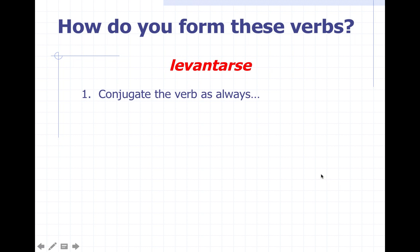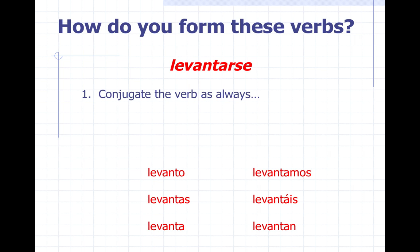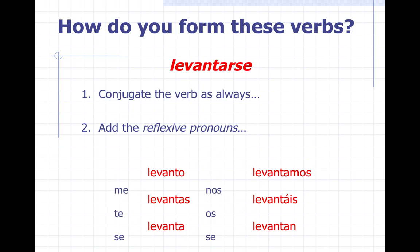How do you form these verbs? Take levantarse. To conjugate the verb, we need to set aside the -se for a moment and go back to its infinitive form with the -ar, -er, or -ir ending. Identifying levantarse as an -ar verb, the conjugations are: levanto, levantas, levanta, levantamos, levantáis, levantan. Now we add the reflexive pronouns: me levanto, te levantas, se levanta, nos levantamos, os levantáis, se levantan.